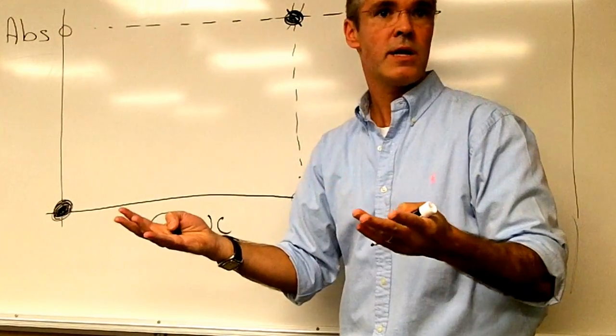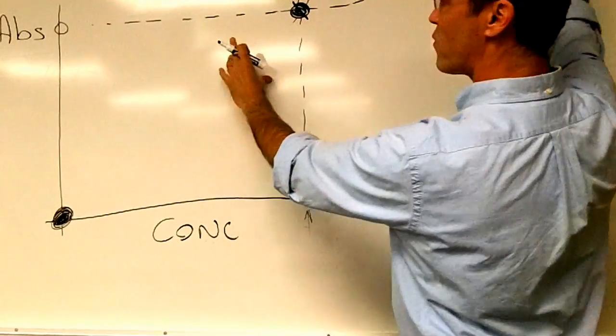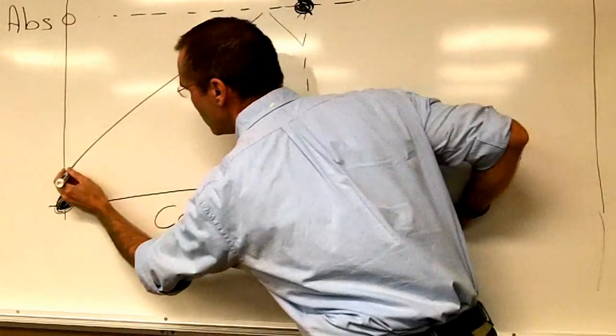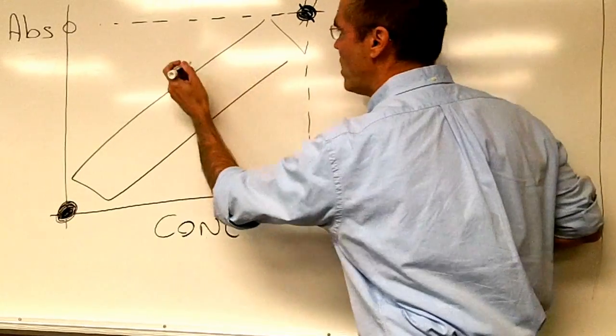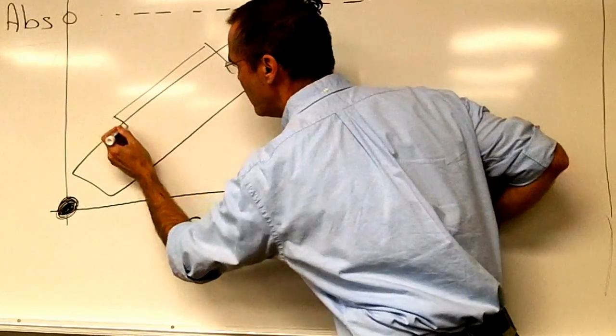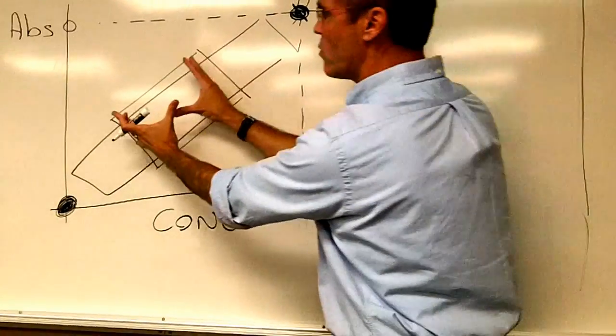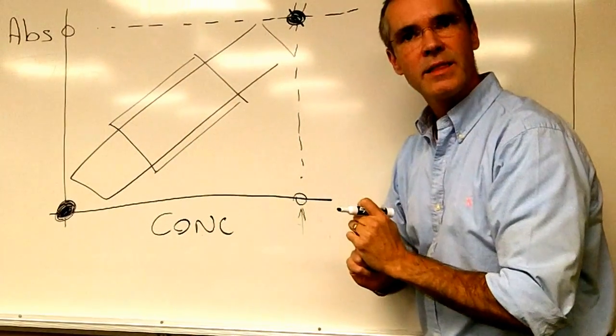You don't want your unknown to be more concentrated than your most concentrated tube in all of your standards. You get that? That's very important. Because we don't want to be out of range. Our unknown should always be found in here, preferably in the middle.